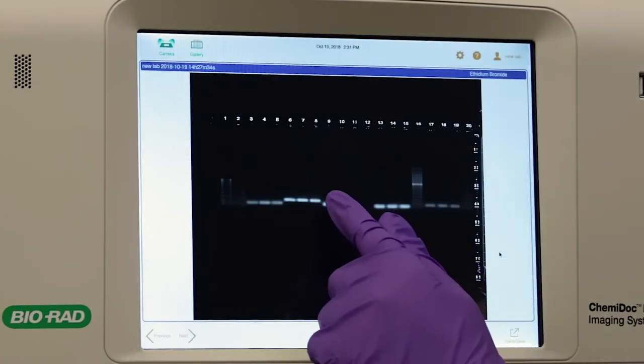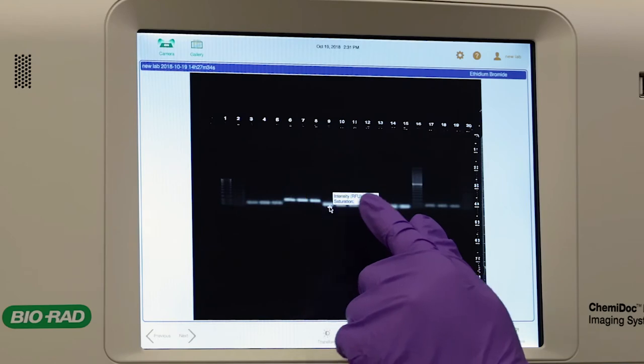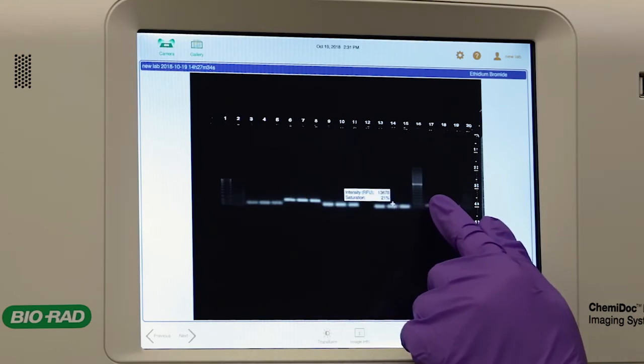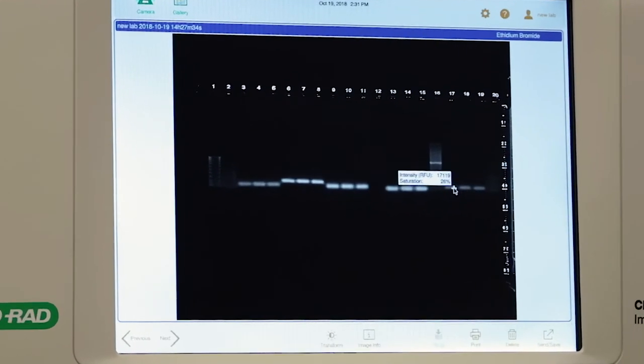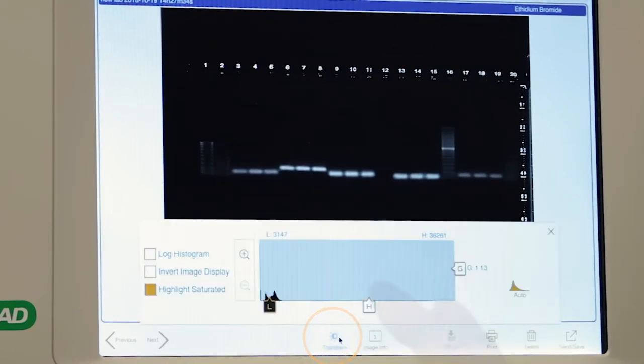For a quick assessment of the band intensities, tap each band and the relative fluorescence units as well as percent to saturation will appear. Tap the Transform icon in the lower toolbar.